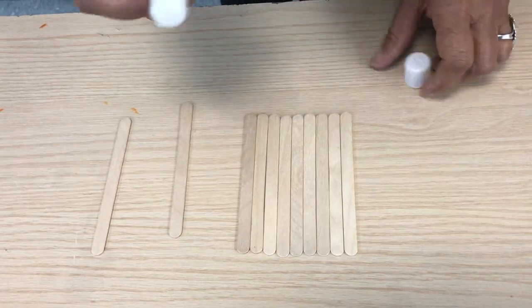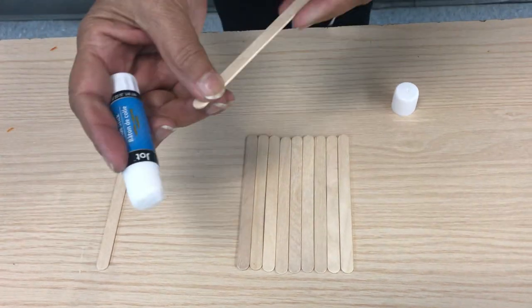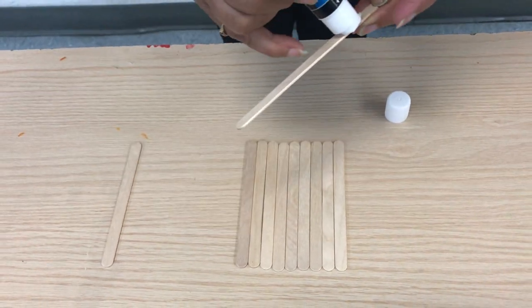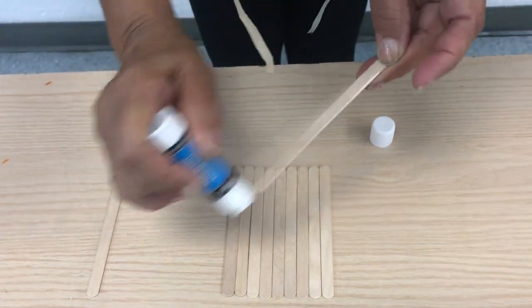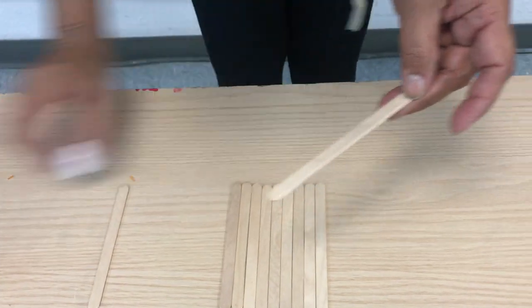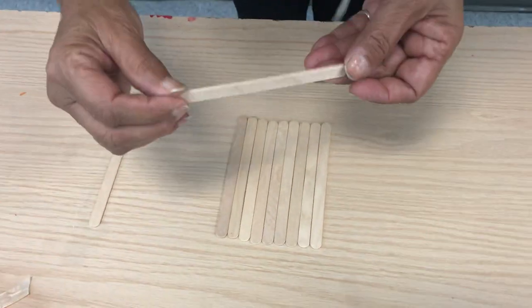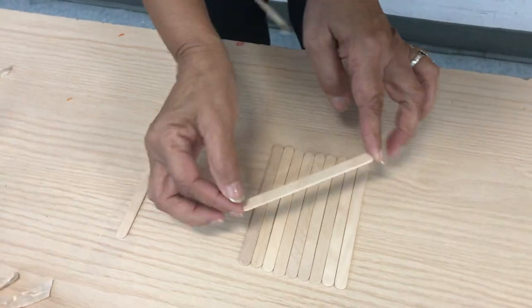Then you take your glue stick and you put glue all along the stick. Vamos a tomar uno de los palitos de madera con mucho pegamento y vamos a pegarlo de forma diagonal.